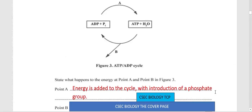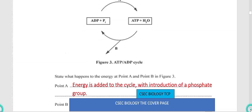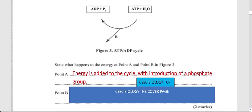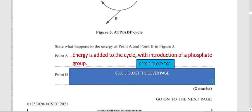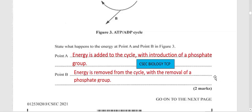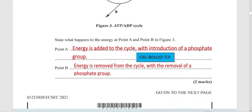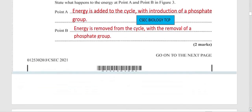Energy is added to the cycle with the introduction of a phosphate group at point A. At point B, energy is removed from the cycle with the removal of a phosphate group — losing a phosphate, energy is also released.